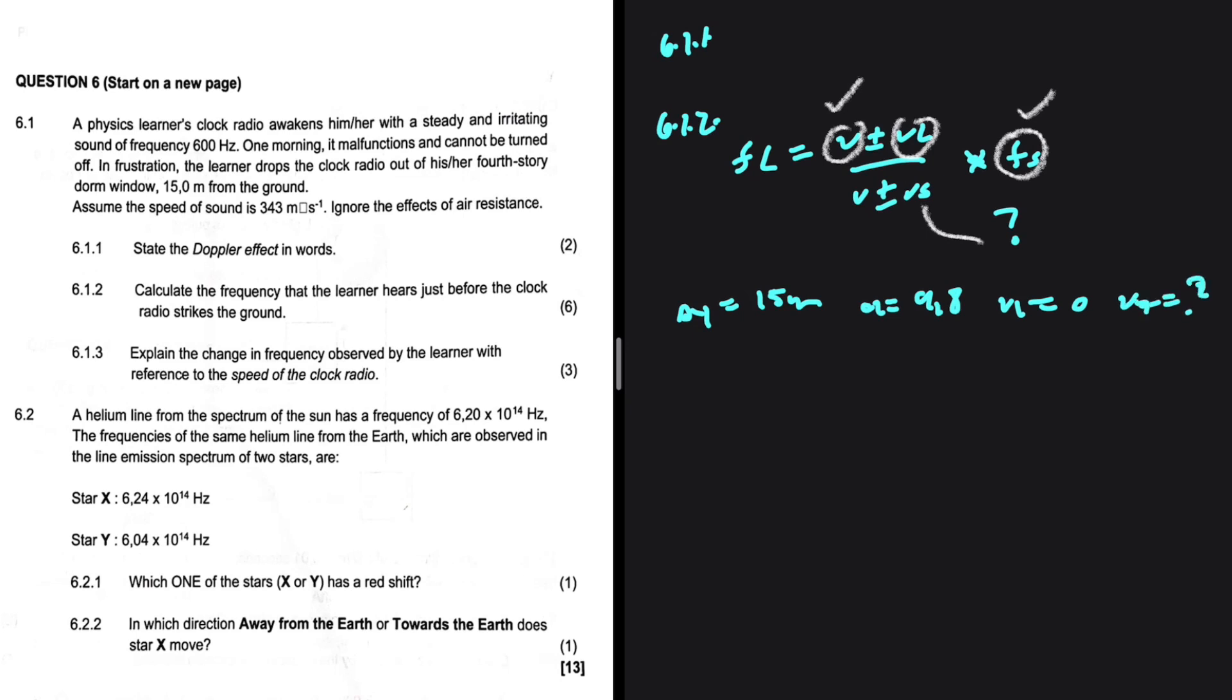So the simplest formula here to use should be VF² = VI² + 2AΔY. So VF² will equal VI, that is zero, so we have 0² + 2 multiplied by the acceleration.